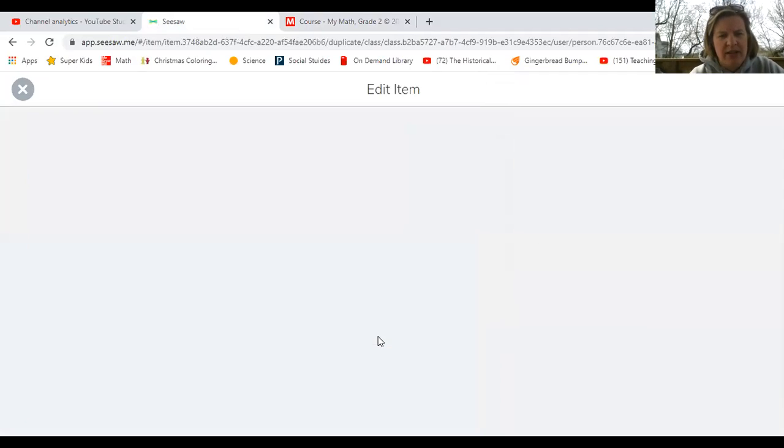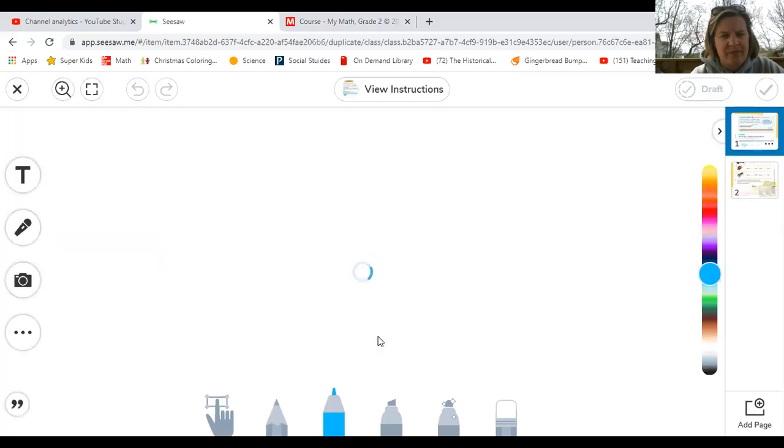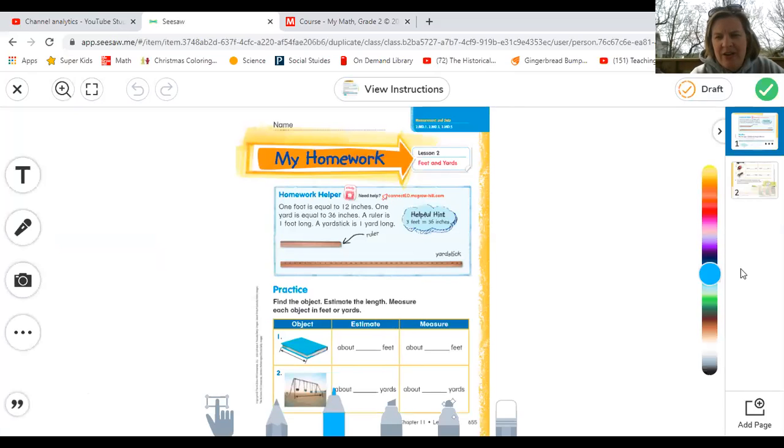Remember, you click the add response button. Okay. And here is your paper. Okay. Look familiar? Looks like your math paper, doesn't it? All right. So if we take a look here, it says, find the object, estimate the length and measure each object in feet or yards.